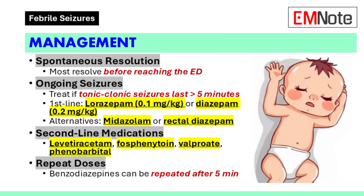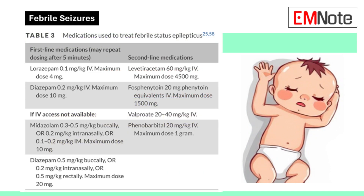Repeat doses of benzodiazepines can be given after 5 minutes for febrile status epilepticus. Second-line medications include levetiracetam at 60 mg per kg intravenously (max 4,500 mg), fosphenytoin at 20 mg phenytoin equivalents intravenously (max 1,500 mg), valproate at 20–40 mg per kg intravenously, or phenobarbital at 20 mg per kg intravenously (max 1 g).